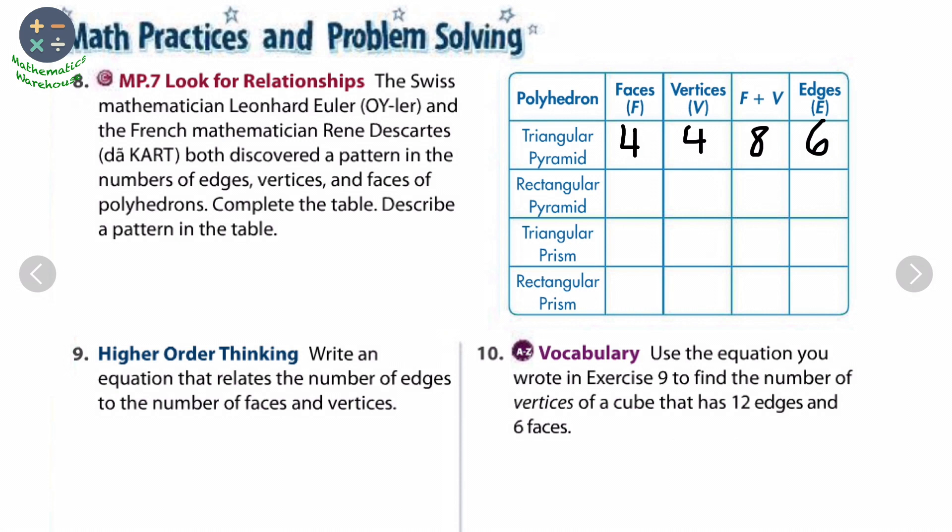By the same way, complete the table. Rectangular pyramid, we have five faces, five vertices, so the sum would be ten. And how many edges? Eight. Also in triangular prism, we have five faces and six vertices, so it would be eleven. So number of edges, we have nine edges. A rectangular prism, we have six faces and eight vertices. So adding, it's fourteen. A number of edges, twelve.